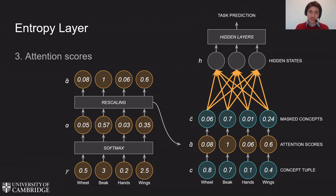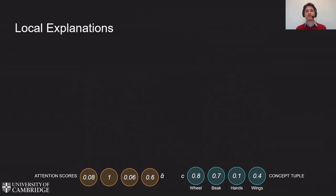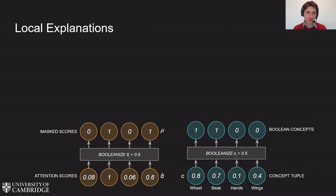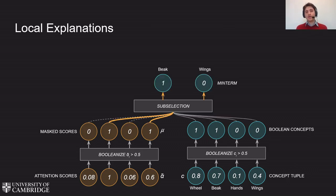Using this attention mechanism, the extraction of local explanations is simple. We just need the normalized attention scores and the concept tuple of the sample we want to explain. First, we booleanize the scores and then we use the boolean attention scores to select the most relevant subset of concepts, like in this case the concept beak and the concept wings.